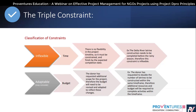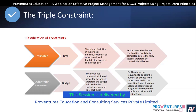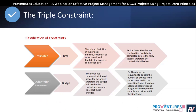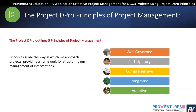An adaptable constraint example: if the donor requests additional scope for the project, the budget will need to be revised and adapted. For the Delta River project, if the donor requests double the number of latrines within the same timeframe, additional resources and budget are required. This kind of constraint is an adaptable constraint.